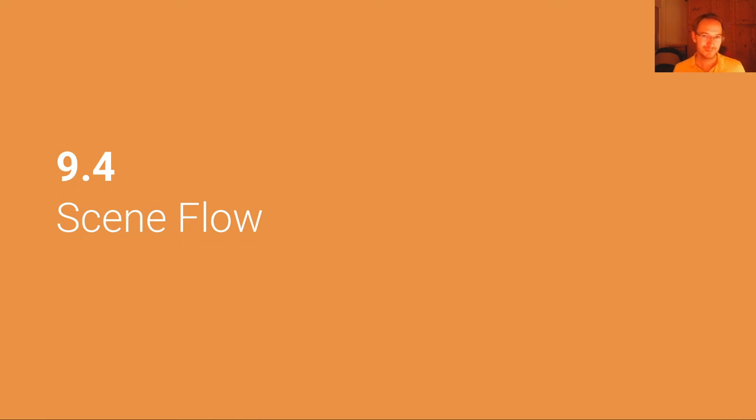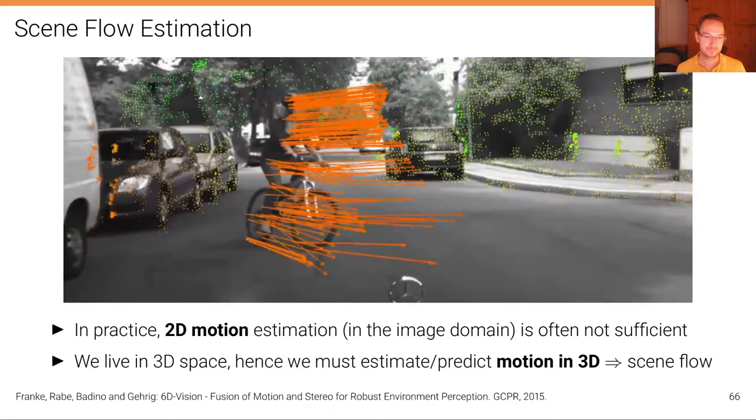Let's now move to 3D scene flow. In practice, 2D motion estimation in the image domain is often not sufficient. We live in 3D space. The vehicles drive in 3D space, in physical 3D space.